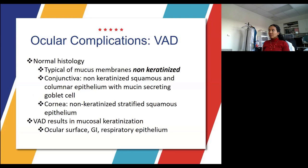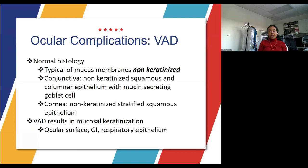For normal histology, your typical mucous membranes are supposed to be non-keratinized. The conjunctiva is a non-keratinized squamous and columnar epithelium with mucin-secreting goblet cells. Your cornea is also non-keratinized, but it's stratified squamous epithelium. What happens when a patient has vitamin A deficiency is there is mucosal keratinization, resulting in ocular surface, GI, and respiratory epithelium concerns.